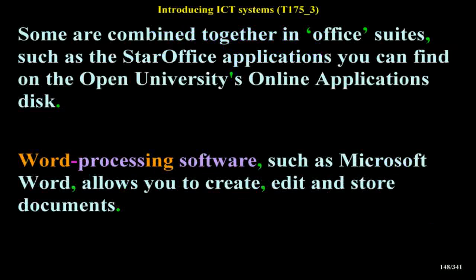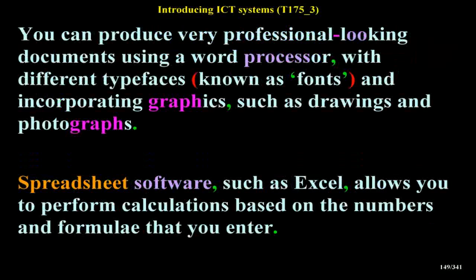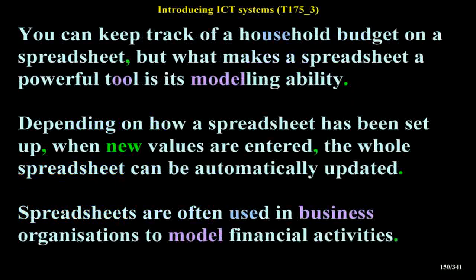Word processing software, such as Microsoft Word, allows you to create, edit and store documents. You can produce very professional-looking documents using different typefaces (known as fonts) and incorporating graphics such as drawings and photographs. Spreadsheet software, such as Excel, allows you to perform calculations based on the numbers and formulae that you enter. You can keep track of a household budget on a spreadsheet, and what makes a spreadsheet a powerful tool is its modeling ability — when new values are entered, the whole spreadsheet can be automatically updated.